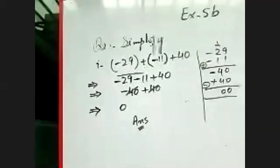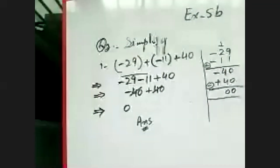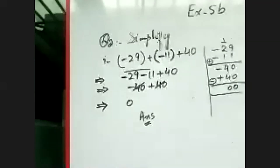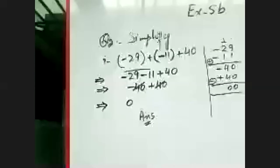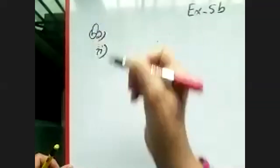I am doing two parts for you. The rest you will do by yourself — let me know tomorrow or Monday if you can do them or not, and I will solve the remaining parts if needed. Second part of question 2, Exercise 5b: minus 231 in the bracket, plus 51, plus (minus 20).